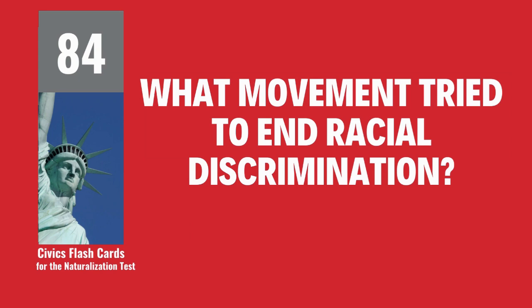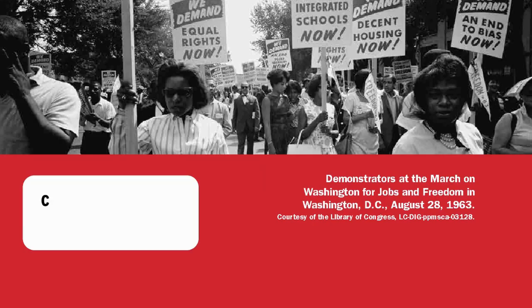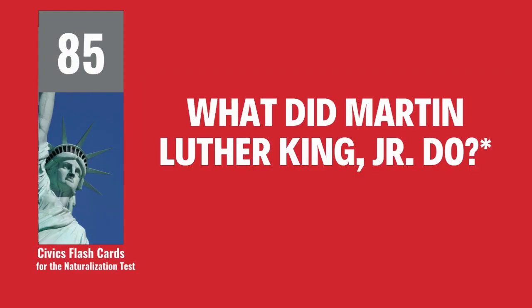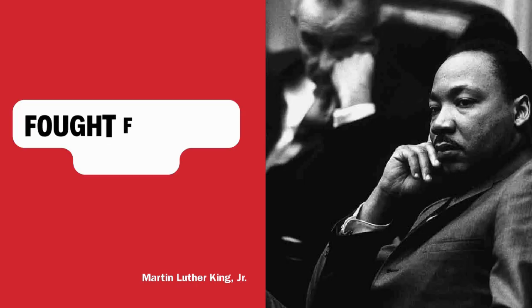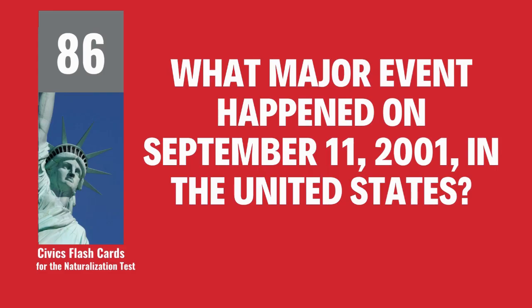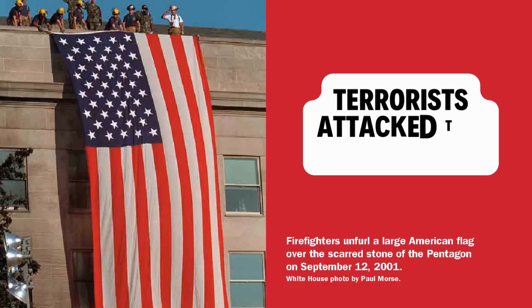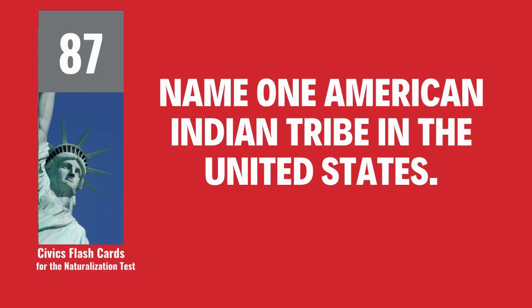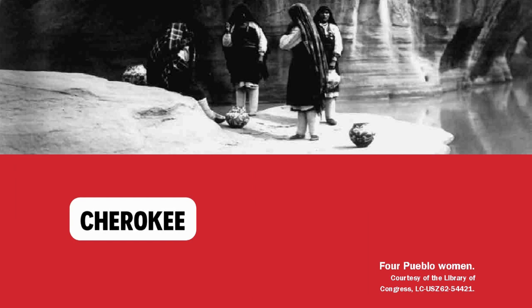What movement tried to end racial discrimination? Civil rights movement. What did Martin Luther King, Jr. do? Fought for civil rights. What major event happened on September 11, 2001, in the United States? Terrorists attacked the United States. Name one American Indian tribe in the United States. Cherokee.